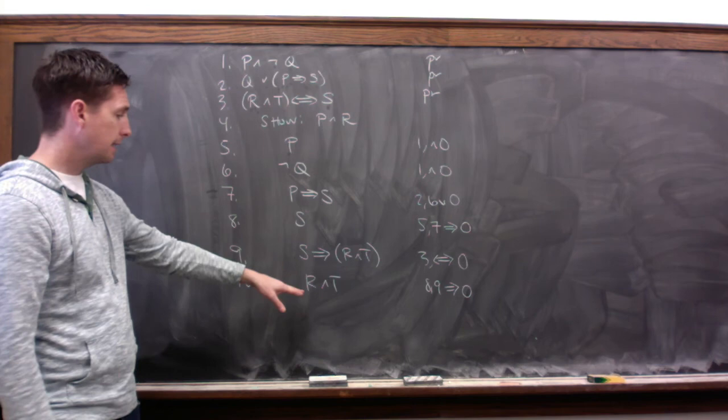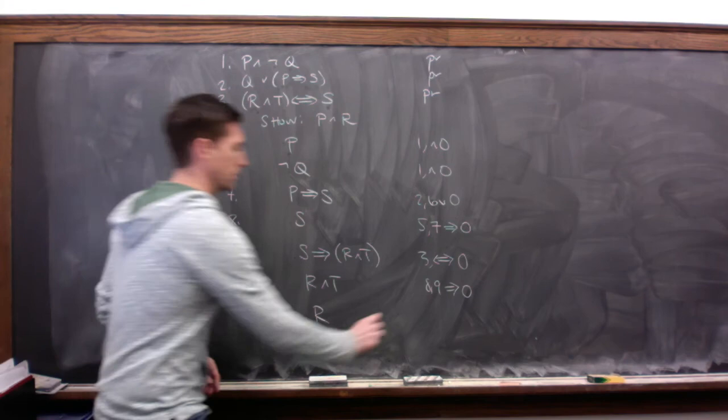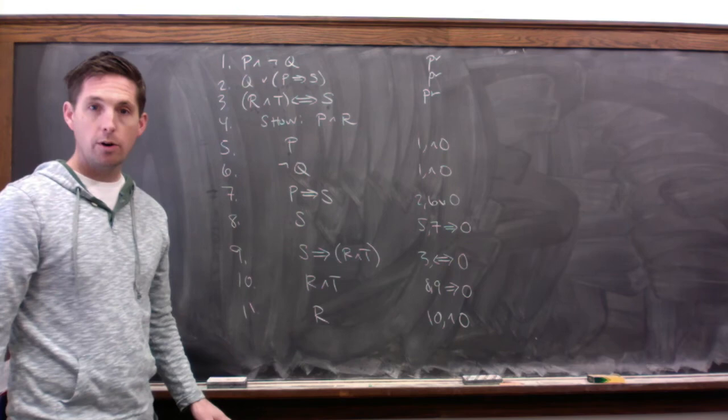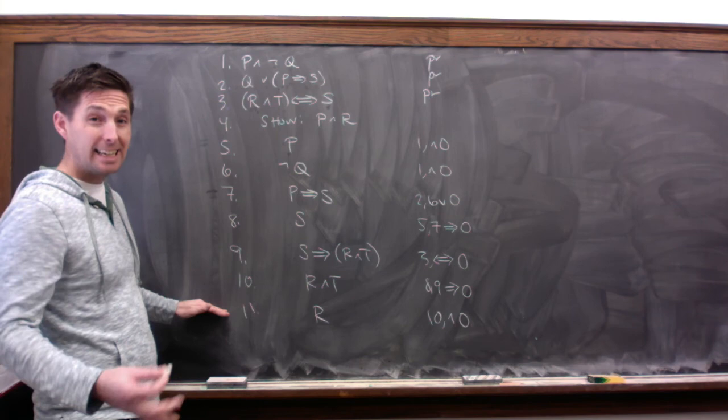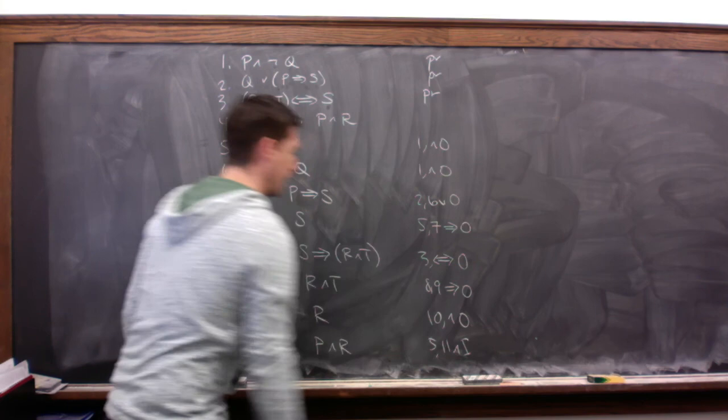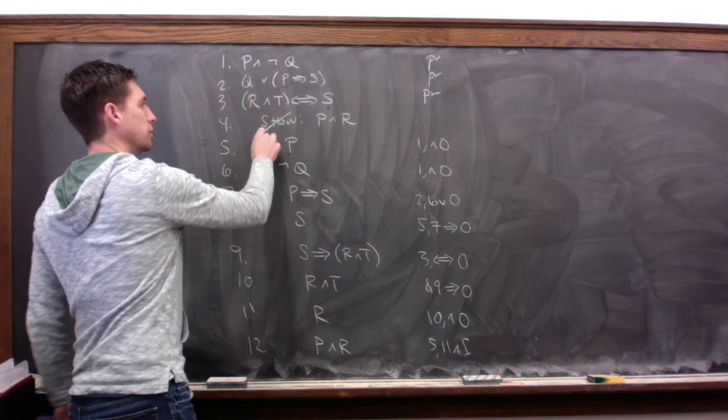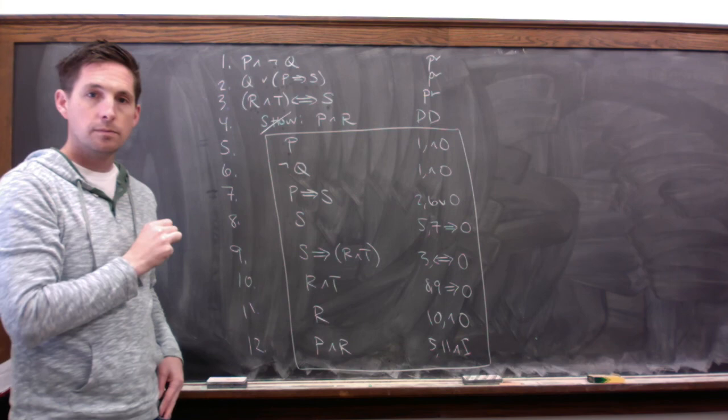Now if you look at 8 and 9, I hope you can see that our arrow out rule applies again. We've got S and we've got S arrow R and T, so we can get R and T by themselves. That's from 8 and 9 by arrow out. And we're almost done. Remember we want to get R by itself so we can put it together with P. Can we get R by itself? Sure. We've got R and T and our and out rule tells us we can get R by itself from line 10 by and out. I've almost run out of board but we've just got one more line left so we can finish our proof. We've got P here in line 5, we've got R down here in line 11, and and in tells us we can put those together. So we're going to get P and R from line 5 and 11 by and in. That's what we're trying to show. So we cancel our show line. We write DD for direct derivation. And then we box all of this stuff underneath the cancelled show line.